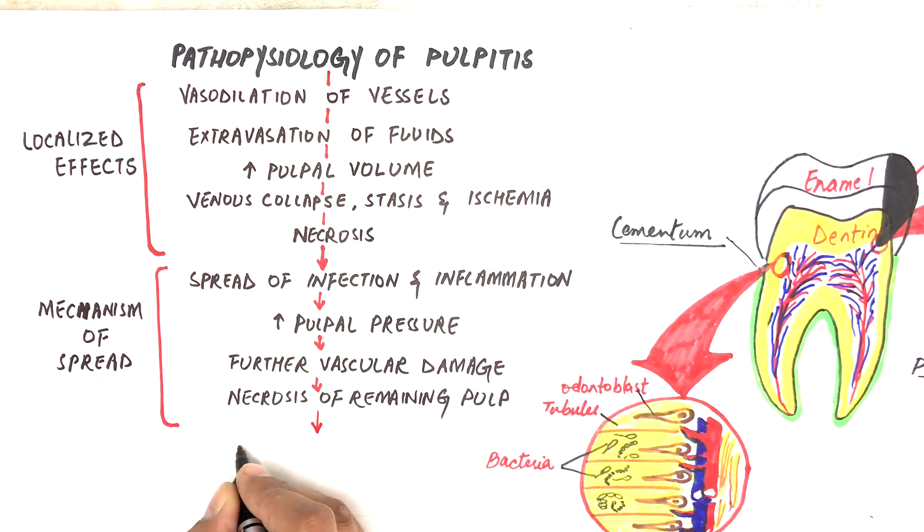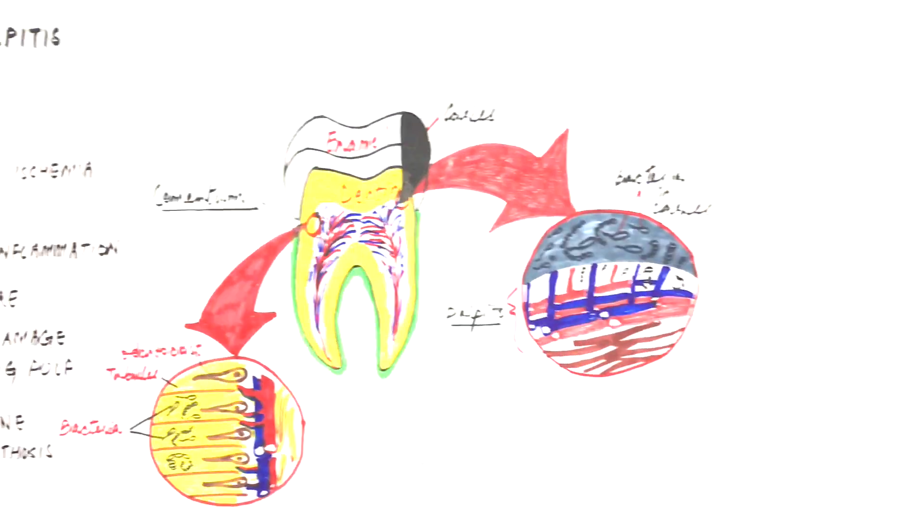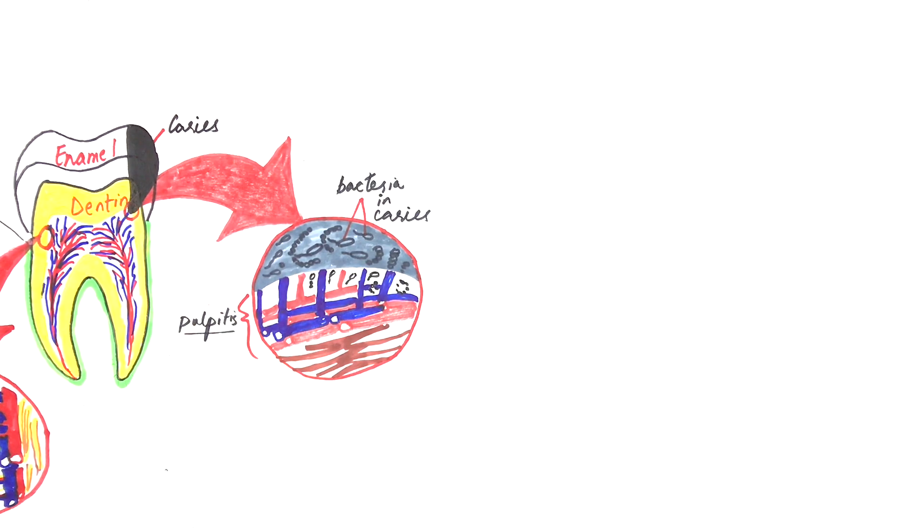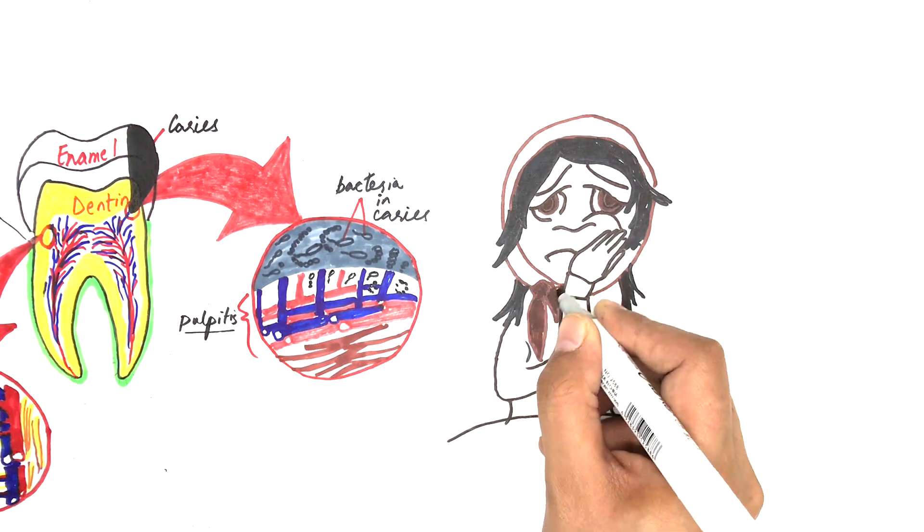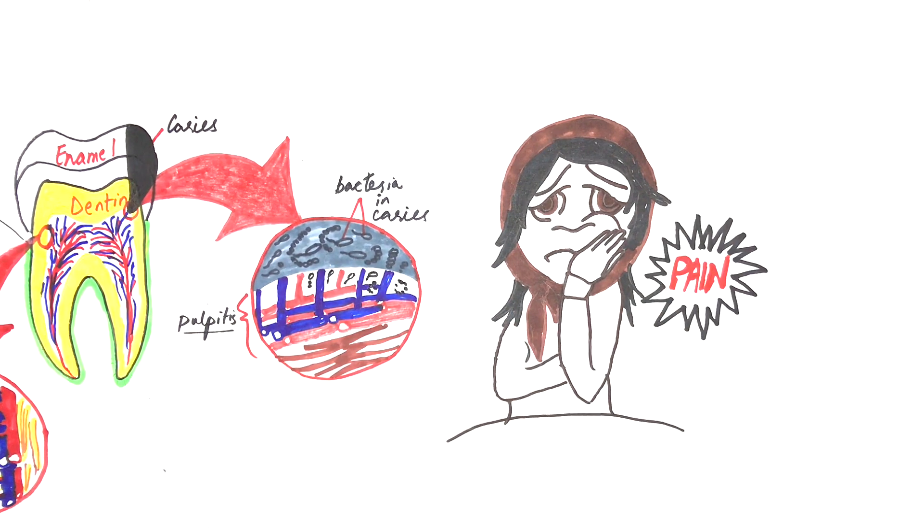Eventually, bacteria from this necrotic pulp may travel through the sterile alveolar bone and may cause periapical pathologies. Pulpitis is considered one of the most common causes of pain in the oral cavity. Pulpitis if not treated can lead to many serious health complications.